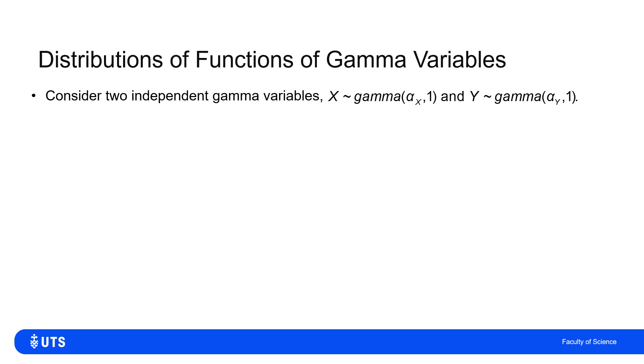So let's say I've got two gamma variables, a gamma alpha X, rate parameter one, and Y, which is a gamma with first parameter alpha Y, and rate parameter one.